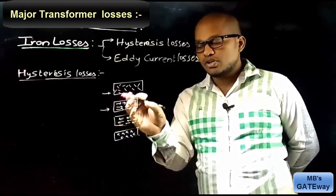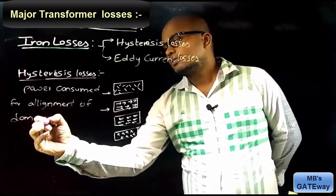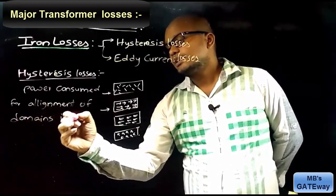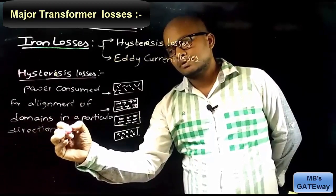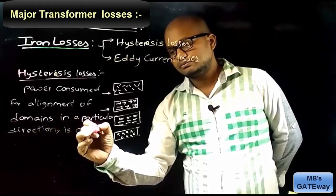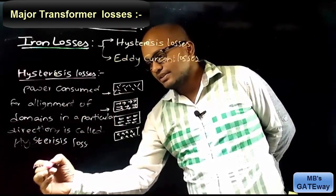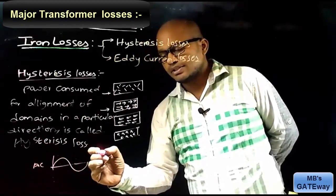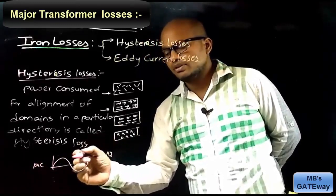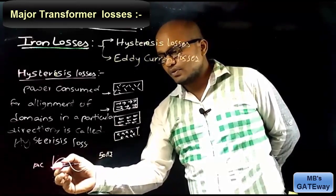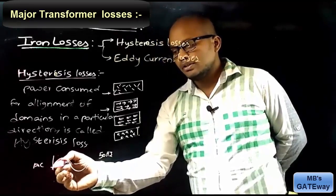The domains will be aligned in a different direction depending on the excitation, and for their alignment they consume some power. That power consumed is called hysteresis loss — the power consumed for alignment of domains in a particular direction. Since the input to the transformer is AC, let us consider a 50 Hz frequency input.